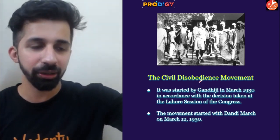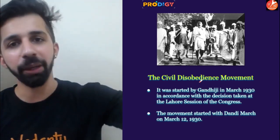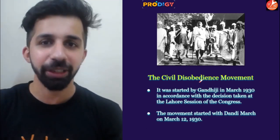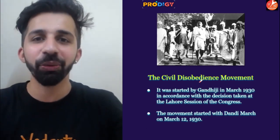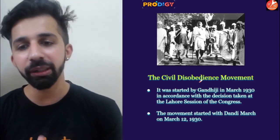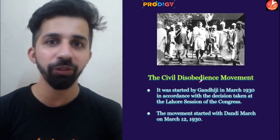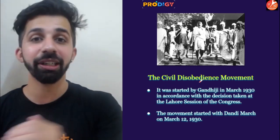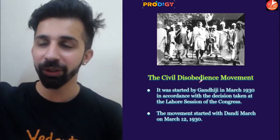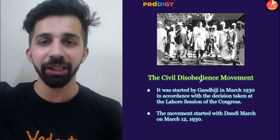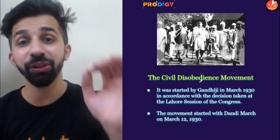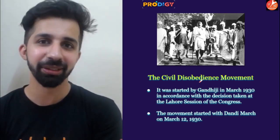On 6th April 1930, Gandhi ji went to the seashore at Dandi, picked up the salt, and broke the salt law — thus launching the countrywide Civil Disobedience Movement. When he started on 12th March 1930, he had 78 followers. By the time he reached Dandi after 24 days, thousands of followers had joined him. He covered a distance of 385 kilometers.